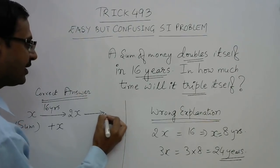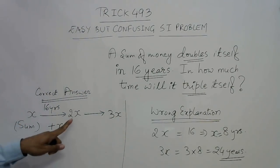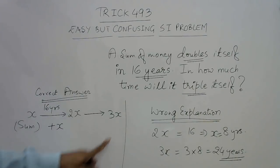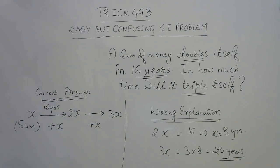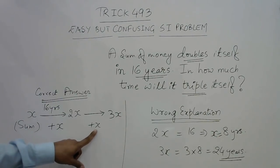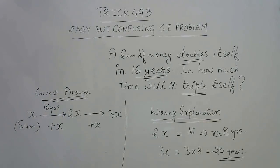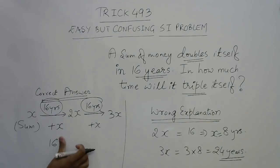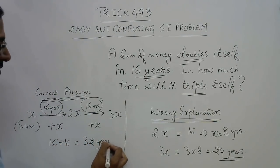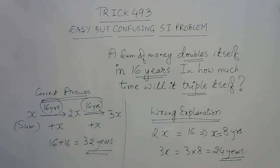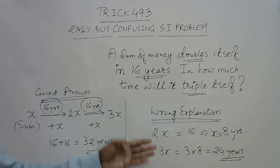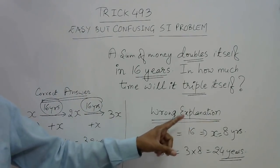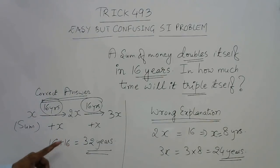Now you need to convert the amount to 3x. How much must be added to 2x to make it 3x? It is plus x again. So for an increase of x, you need 16 more years. Therefore the total time taken to triple is 16 + 16 = 32 years. This is a very common mistake in doubling and tripling problems — the answer is 32 years, not 24.